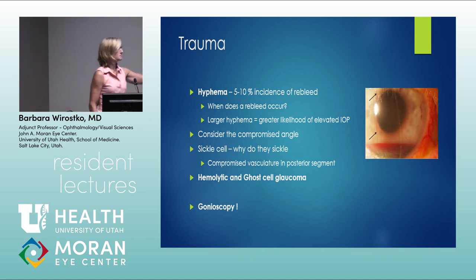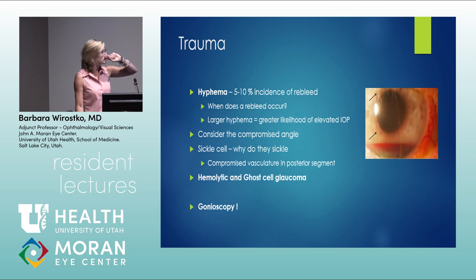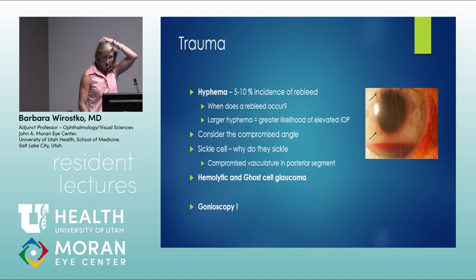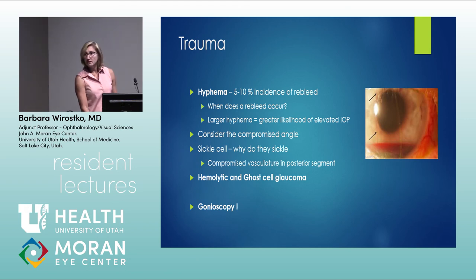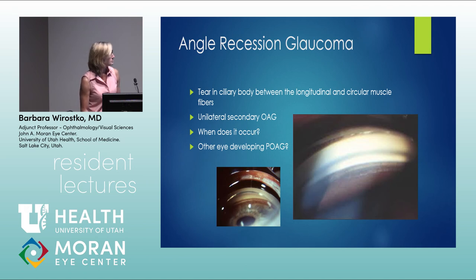Ghost cell glaucoma presents with khaki-colored degenerated RBCs in the anterior segment. When you suspect ghost cell glaucoma, look at the anterior vitreous for residual ghost cells or RBCs from a vitreous hemorrhage. Angle recession glaucoma involves tearing of the ciliary body with disruption of longitudinal ciliary muscle fibers — it's unilateral secondary open angle glaucoma, though the other eye may develop primary open angle glaucoma.